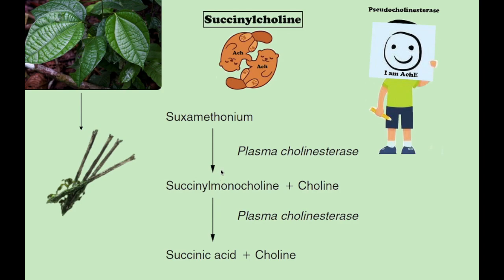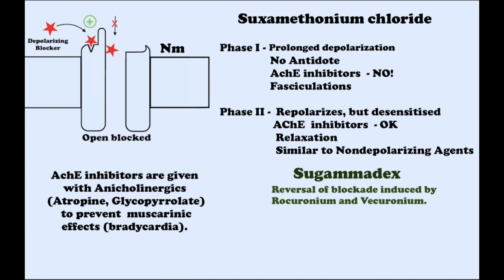Succinylcholine is hydrolyzed to choline and succinyl monocholine, which is weakly active. Succinyl monocholine is metabolized further by plasma cholinesterase to succinic acid and choline. Because metabolism is rapid, less than 10% is excreted in the urine, and it is largely resistant to acetylcholinesterase. It has a duration of action of only a few minutes if given as a single dose. Blockade may be prolonged in patients with genetic variants of plasma cholinesterase that metabolize succinylcholine very slowly. Reversal of blockade is done with sugammadex, which is a chemical antagonist of rocuronium and also has activity against vecuronium. This sugammadex–neuromuscular blocker chelation product is then excreted in the urine.